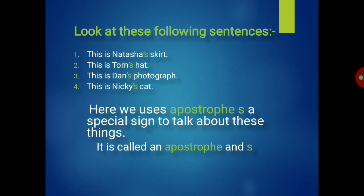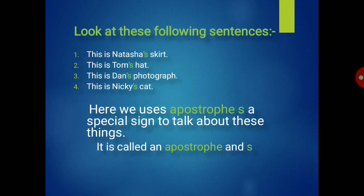First, look at these following sentences: this is Natasha's skirt, this is Tom's hat, this is Dan's photograph, this is Nikki's cat. Here we use apostrophe s — a special sign — to talk about things. In every noun there is an apostrophe s, and they are talking about things — skirt, hat, photograph, cat — that belong to them.